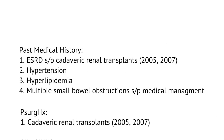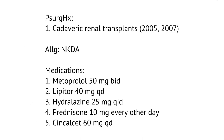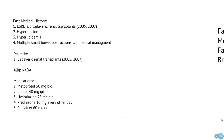In terms of his past medical history, he has end-stage renal disease with two previous renal transplants, now on dialysis, as well as hypertension, hyperlipidemia, and multiple small bowel obstructions status post medical management. His past surgical history includes placement of both renal transplants. He has no known drug allergies. His current medication list includes metoprolol 50mg BID, Lipitor 40mg daily, hydralazine 25mg four times daily, prednisone 10mg every other day which he takes for his renal transplant that has now failed — previously on prednisone 10mg every day the prior year but has since decreased his dosage — and lastly Sevelamer 60mg daily.